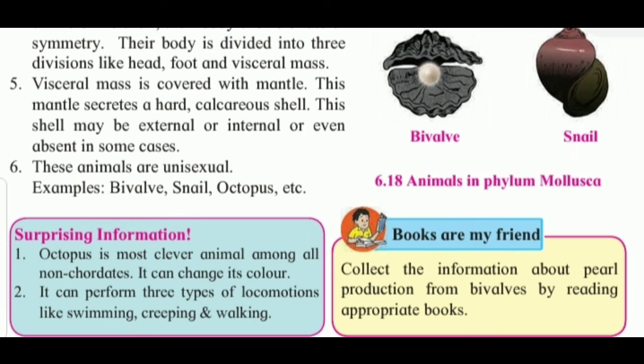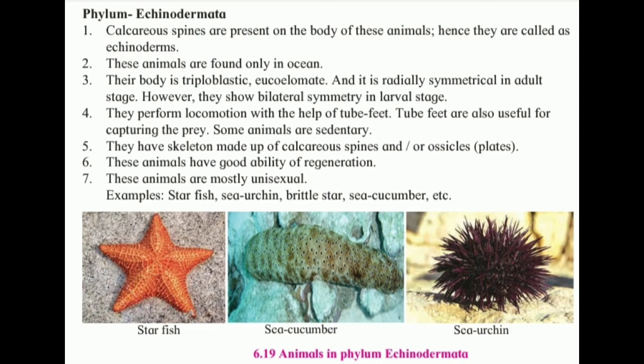Octopus is the most clever animal among all non-chordates. It can change its color. It can perform three types of locomotion: swimming, creeping, and walking.